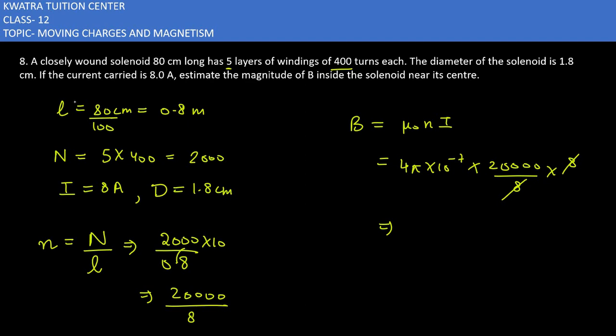Then we have to multiply it. 4 and 20,000, we will multiply: 80,000 times pi times 10 to the power minus 7. Now here are 4 zeros. 4 minus 7 is minus 3. So it is 8 pi times 10 to the power minus 3 tesla.